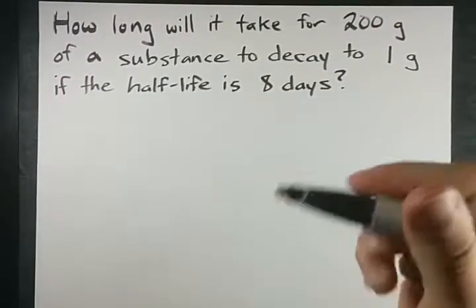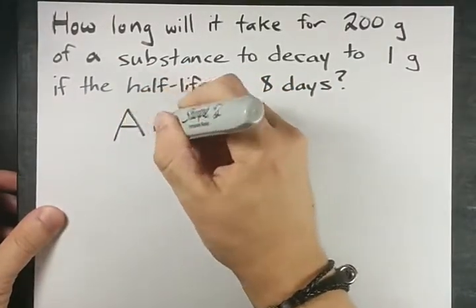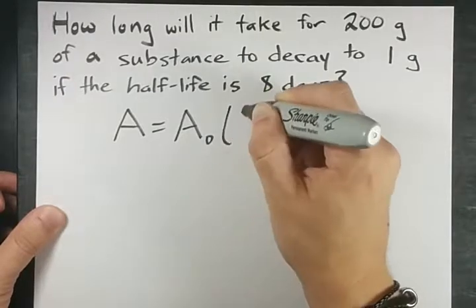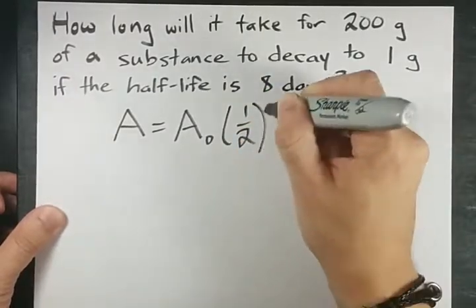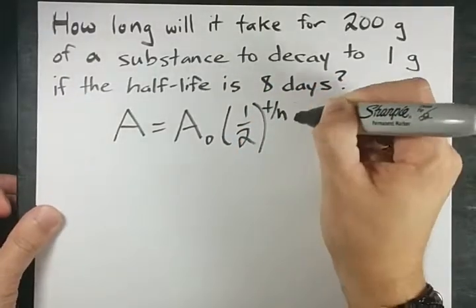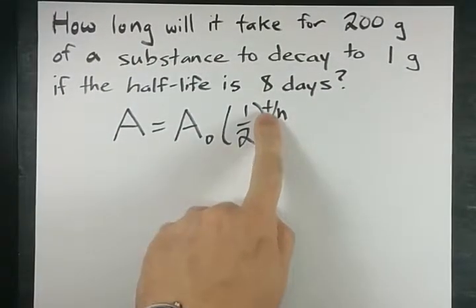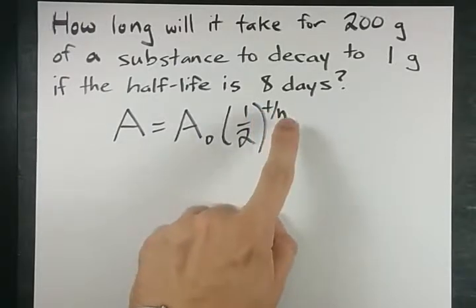In order to solve a question like this you need the half-life equation which is A equals A₀ times one-half to the power of t over h. We can fill in the numbers that were given and solve for t, the length of time that will have elapsed.